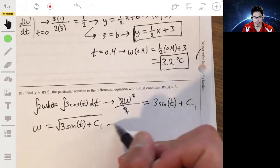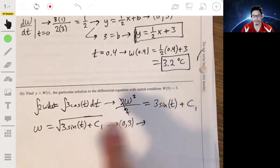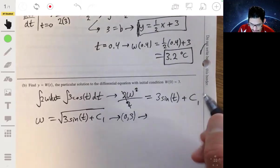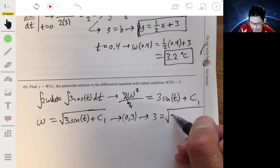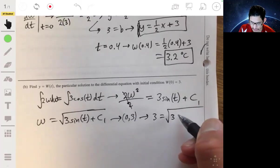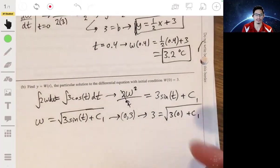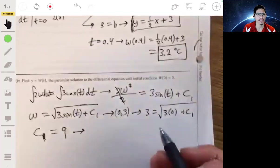Since we were told W of 0 equals 3, we use this to solve for C1. So, that means essentially 3 is equal to square root of 3 times the sine of 0. The sine of 0 is 0. So, 3 is the square root of C1 essentially. So, C1 is then just 9. Our constant is just 9.